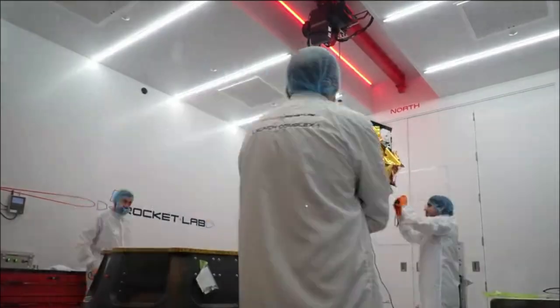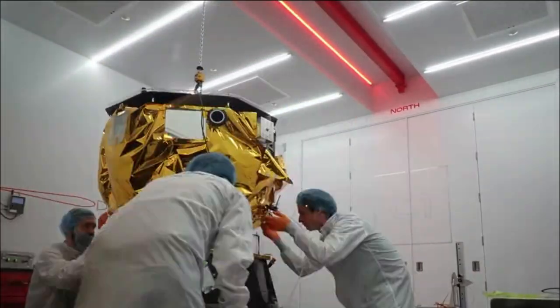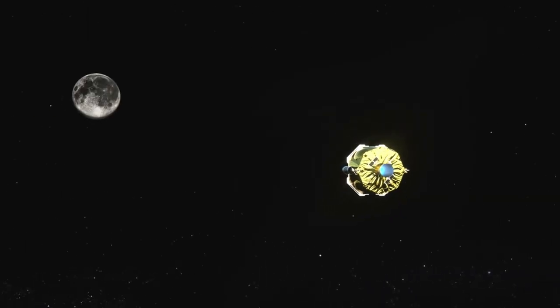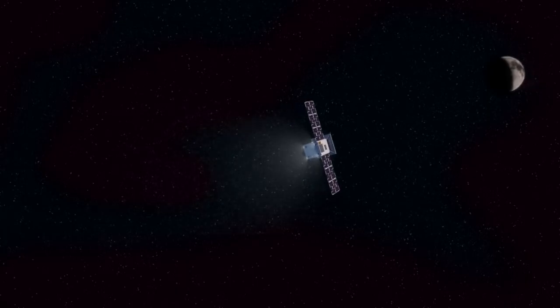On September 10th, NASA reported that the Capstone spacecraft executed a planned trajectory correction maneuver on Thursday evening, September 8th, and Capstone mission controllers have since obtained telemetry confirming that an issue put the spacecraft in safe mode near the end of the maneuver.